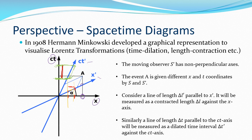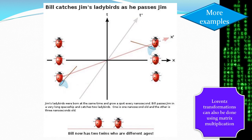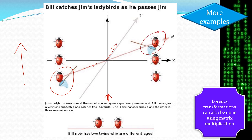Think of some ladybugs all born at the same time — they're all twins aging through time at the same rate on the time axis. But if you're on a spaceship traveling relativistically, you might catch one ladybug and then travel through your altered x-axis until you reach another ladybug. You capture two ladybugs at different points in time, and hence you have two twins that are now different ages. That's a bit of an extension from the course.